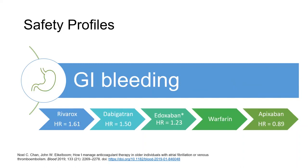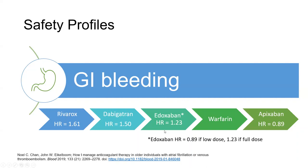Finally, we'll turn our attention to rates of GI bleeding. This is where it gets interesting — basically all of the DOACs, with the exception of apixaban and dose-reduced edoxaban, have higher rates of GI bleeding compared to warfarin. The reason for this is not fully clear and is being fleshed out further, with results being replicated in small observational trials. One hypothesis is that rivaroxaban, dabigatran, and edoxaban stay in the GI lumen longer, where they may exert a topical anticoagulant effect.